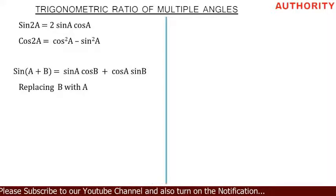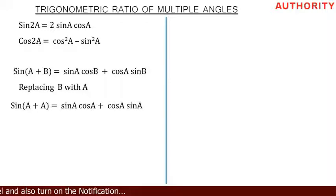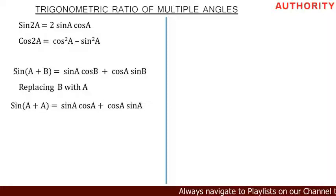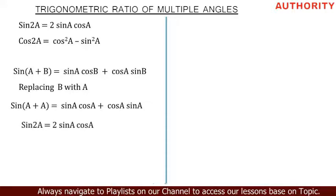So sine (A + B) is equal to sine A cos B plus cos A sine B. Now in this expression, let's replace B with A. Anywhere we see B, replace it with A. That means we have sine (A + A) is equal to sine A cos A plus cos A sine A.